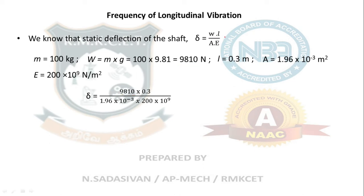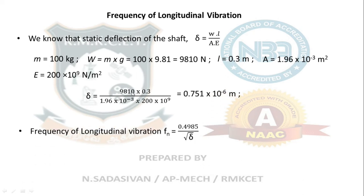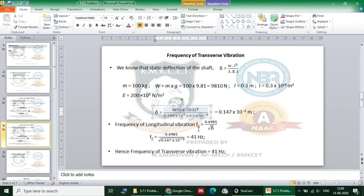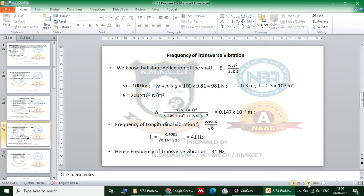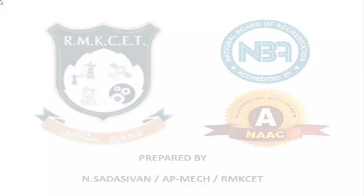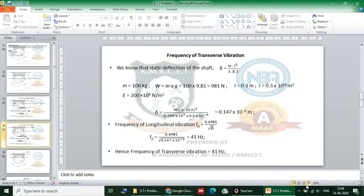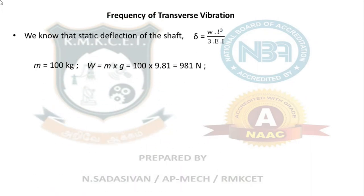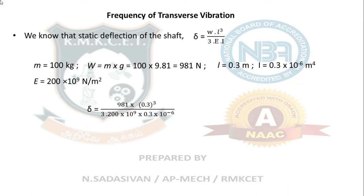A student pointed out a calculation error — the weight should be 981 N, not 9810 N. That is correct: 100 × 9.81 = 981 N. It was a typing mistake, and the answer from the book is correct. So 981 × 0.3 divided by the cross-section area and Young's modulus.